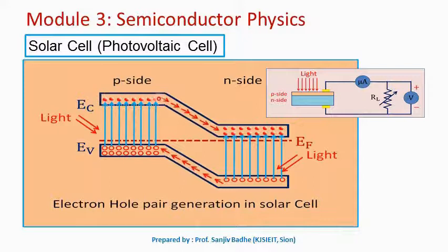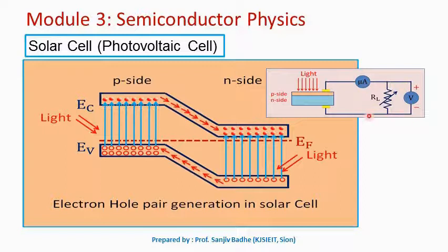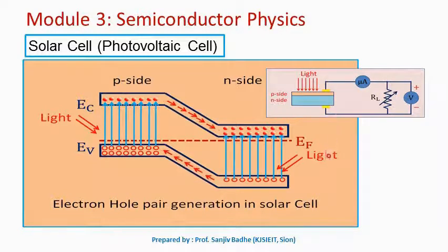A large number of electrons are now available in the conduction band on the p-side, which can easily climb down the hill and give rise to current. Large numbers of holes available in the valence band on the n-side also climb up the hill and contribute to the current. Whenever light energy is incident on the solar cell, current flows through the circuit and a voltage V is developed across the solar cell. This current is measured using a microammeter and the voltage is developed across a load resistance connected to the solar cell.